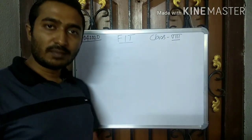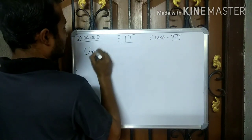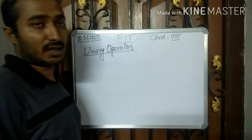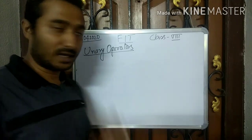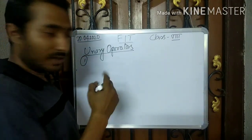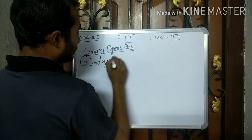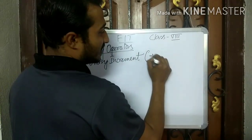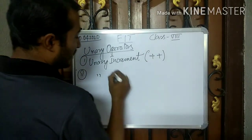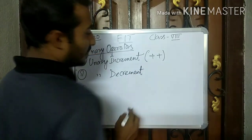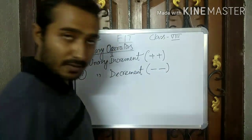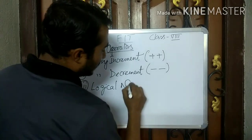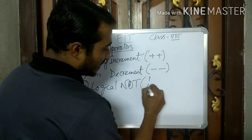First we will discuss about unary operators. Unary operators are further classified into three categories. First is the unary increment operator, denoted with the plus plus symbol. Second is the unary decrement operator, denoted with the minus minus symbol. And the last one is the logical NOT operator, denoted with the exclamatory mark.